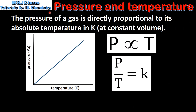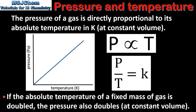Next we look at the relationship between the pressure and temperature of an ideal gas, otherwise known as Gay-Lussac's law. The pressure of a gas is directly proportional to its absolute temperature in Kelvin at constant volume. This can be written as pressure is directly proportional to temperature. In this graph of pressure against temperature in Kelvin we can see we have a straight line. This can also be written as pressure divided by temperature equals a constant K. For example, if the absolute temperature of a fixed mass of gas is doubled, the pressure also doubles at constant volume.